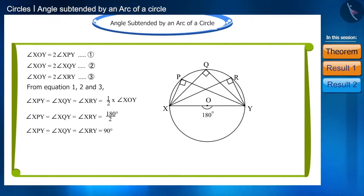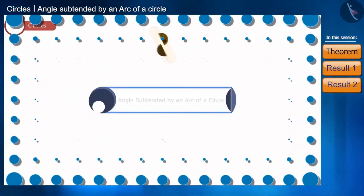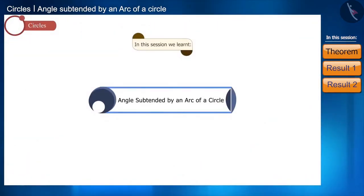Thus, we have found another property of a circle, that the angle of a semi-circle is a right angle. Today, we discussed the angles subtended by an arc of a circle and theorems related to it. See you in the next video with some questions based on this concept. Thank you.